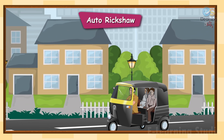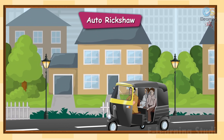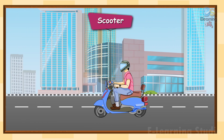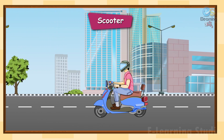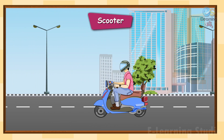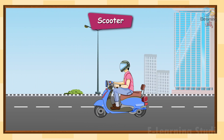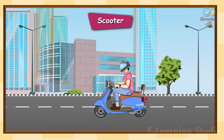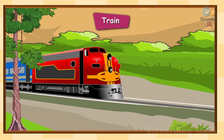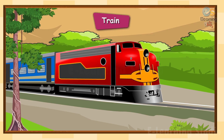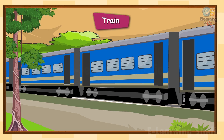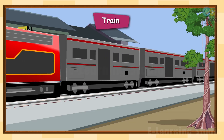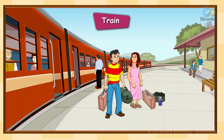An auto rickshaw can carry only two to three people at a time. Scooter: a scooter has two wheels. It is also called a two-wheeler. It is a personal vehicle.